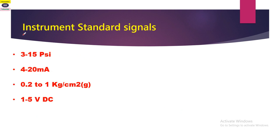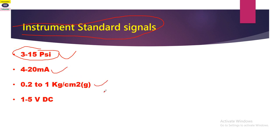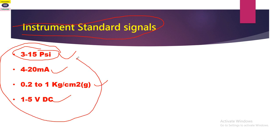Now, what are the instrument standard signals? There are four: 3 to 15 PSI, 4 to 20 milliampere, 0.2 to 1 kg per cm squared, and 1 to 5 volts DC. These are the four main instrument standard signals which can be used for measuring the process variable. If asked in an interview, you can simply list these four.